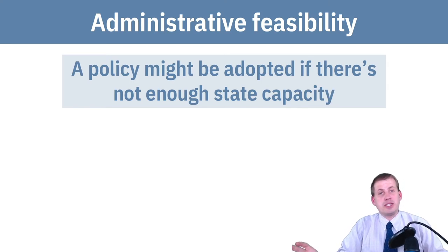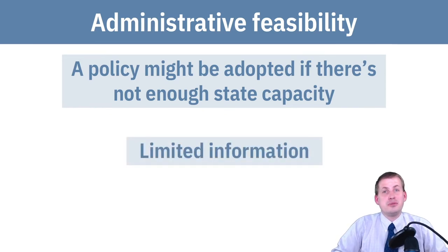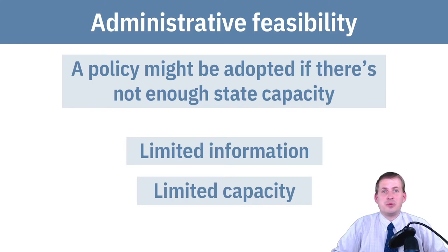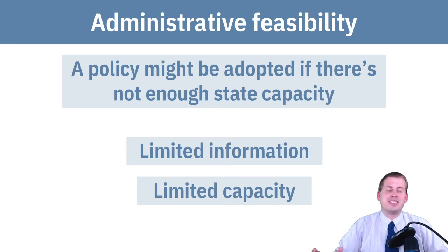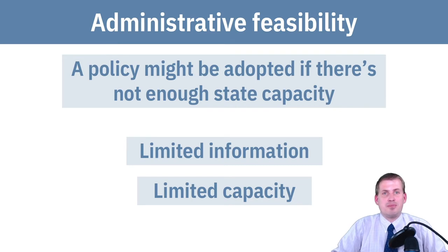The administrative feasibility side is: you might have a really good policy that people will actually follow, but if there's not enough state capacity to administer it, it's not going to work and you won't be held accountable. This could be due to limited information — you don't know enough about the people you're legislating for — or limited capacity, like passing a complicated law requiring enormous data collection, only to have no expertise to actually interpret or implement what the data shows.